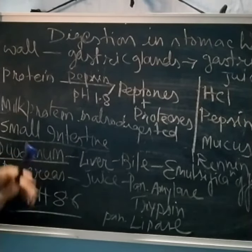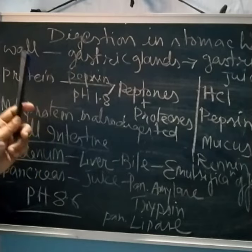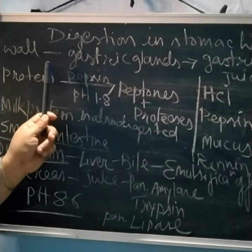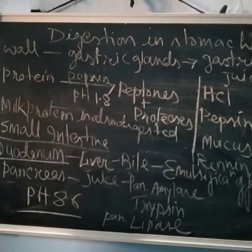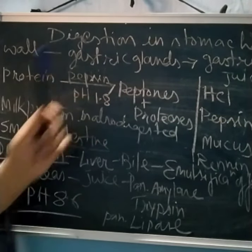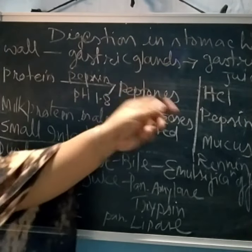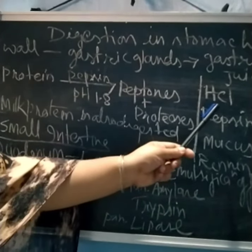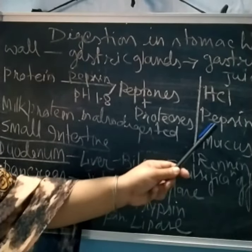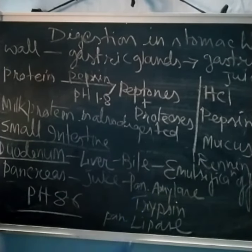The stomach has a wall, and as I mentioned in the last class, the stomach wall has gastric glands. These gastric glands produce gastric juice, which contains components like hydrochloric acid, pepsin enzyme, mucus, and one more enzyme called rennin.